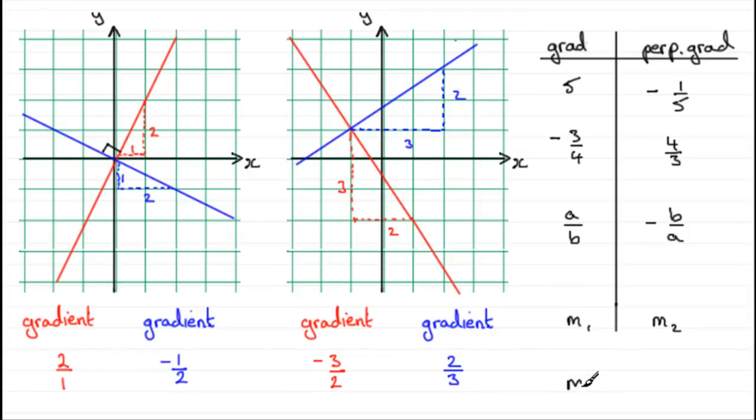So the product of any two perpendicular gradients will always be minus one. And this is a formula that you'll often see in formula books and in textbooks. So I'd encourage you to learn this. But I never really use this that much.